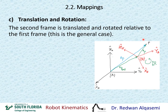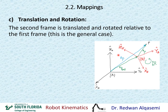Now if I look here, I have a point P that's already defined relative to frame B, and that definition is right here — P relative to frame B in green. And what I need to do is define P, but this time relative to frame A, and that definition is right here, P relative to A in blue.